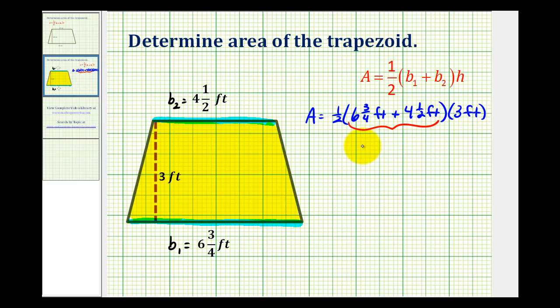So we'll have six and three-fourths plus four and one-half. Of course we have to have a common denominator, which would be four. So multiply this fraction by two over two. So we have six and three-fourths, plus four and two-fourths. So this will give us five-fourths here and ten here.